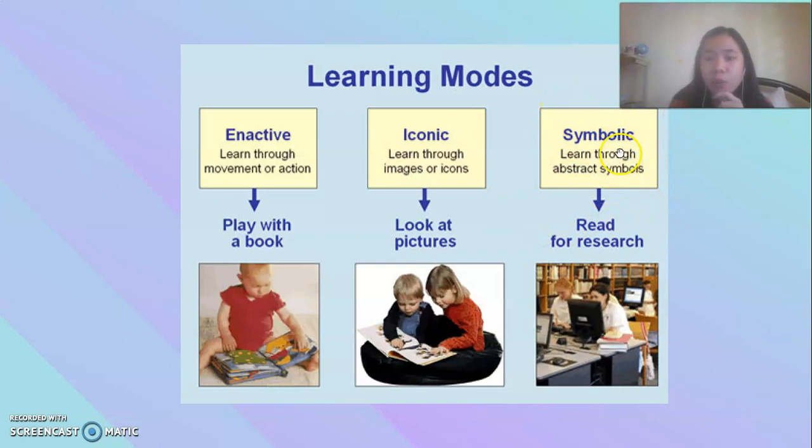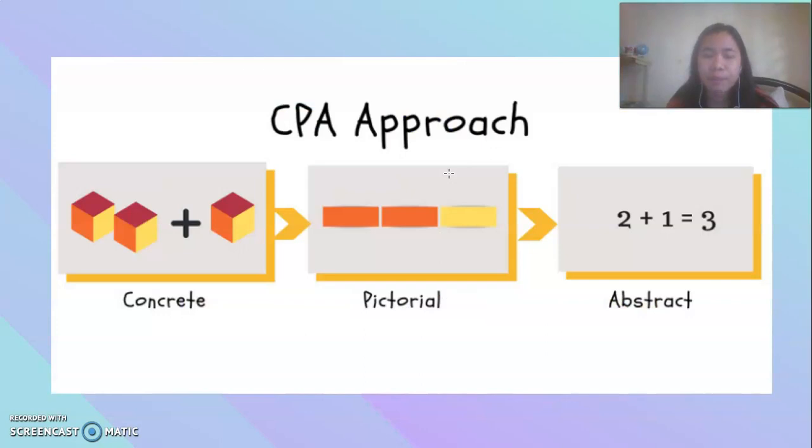The last level is the symbolic level, in which the learners can learn through abstract symbols. So they are just given books now, no more pictures. They can read for research. So they are given journals, links that they can search up online. Again, the three learning modes: the enactive, iconic, and symbolic.